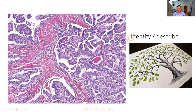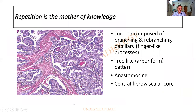Now look at this — it is like a tree, an arboriform pattern. There is a trunk, branches, it branches and rebranches, small twigs, and then the leaves of the parenchyma — it has exactly this kind of appearance. The tumor is composed of multiple branching and rebranching papillary or finger-like processes with a tree-like arboriform pattern, anastomosing in some areas. There is a central fibrovascular core, which we shall see shortly.